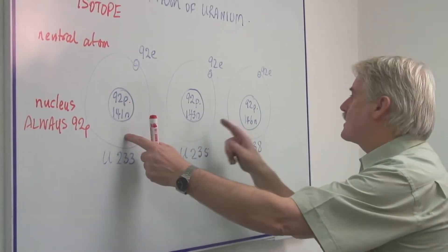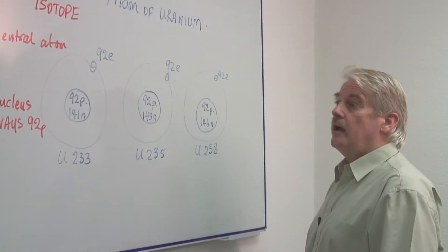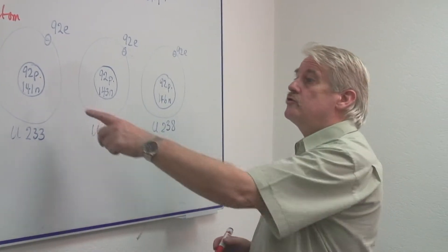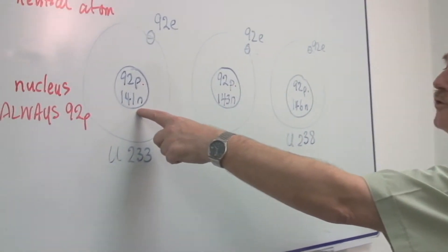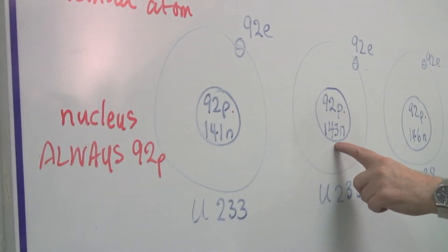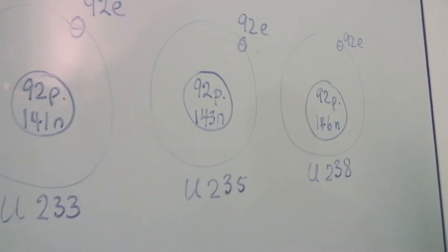The difference between these atoms is that they have different numbers of neutrons. In this, a hundred and forty-one. In this, a hundred and forty-three. And in this, a hundred and forty-six.